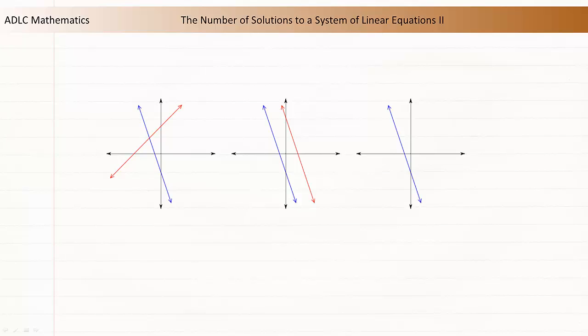The third possibility is that the two lines representing the system are the same line. Each point on these coincident lines is a solution to the system. This type of system has an infinite number of solutions. Let's look at what happens if we try to solve the second and third types of systems algebraically.